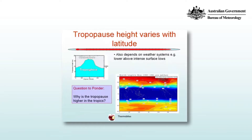If you look at the tropopause height, you also see that it varies with latitude as well as temporally at a fixed point. The figure in the top left here shows the mean tropopause height over the full range of longitudes for a given latitude, and you can see that the tropopause is lowest in the polar regions and increases quite rapidly, being highest somewhere near the equator.